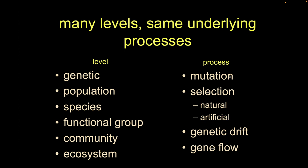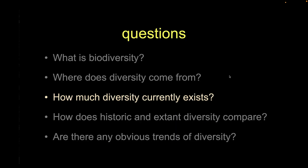We have multiple levels of diversity, and all these processes — allopatric and sympatric speciation, natural selection, genetic drift, gene flow, sexual selection — together comprise our diverse ecosystems and communities, which are at the heart of our biodiverse planet. Let's talk about how much diversity actually exists. You've already had some readings on this, so it should be familiar.